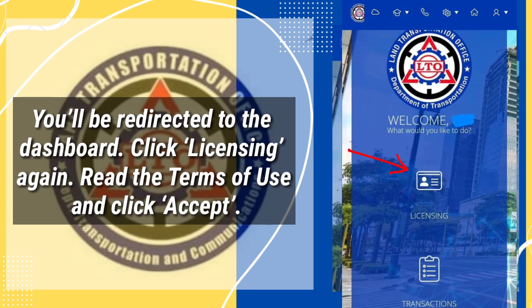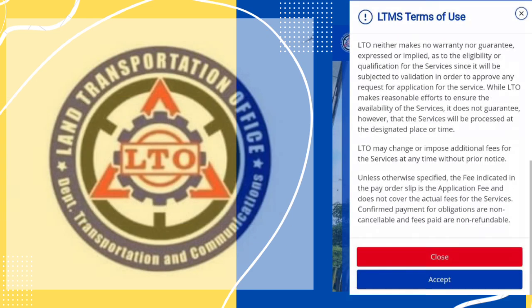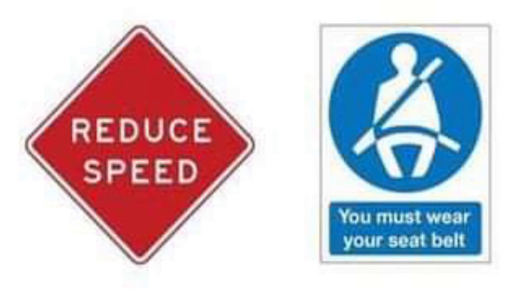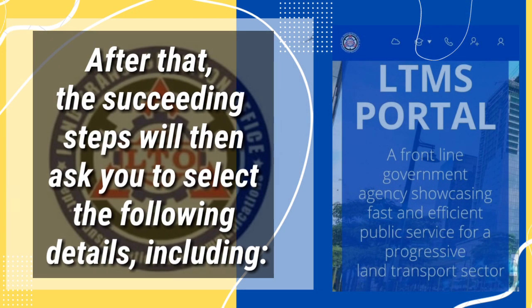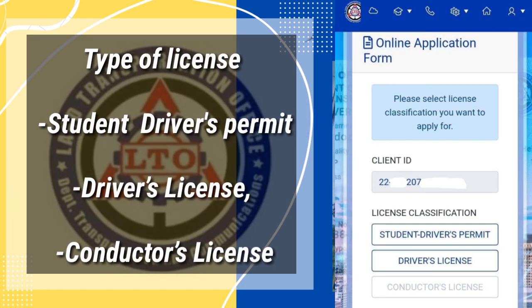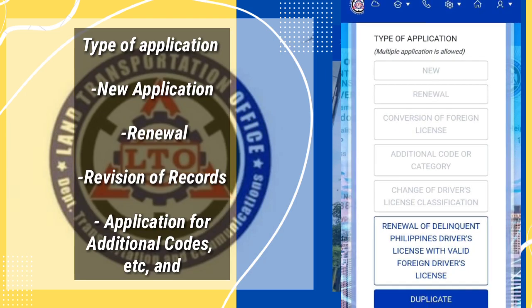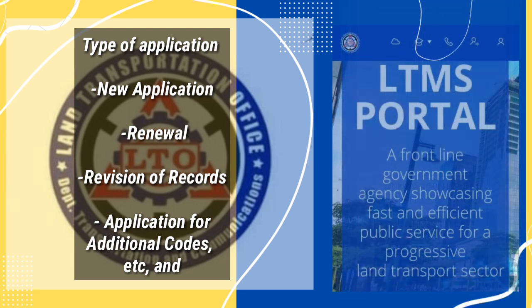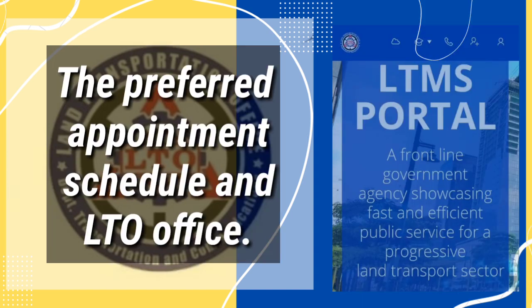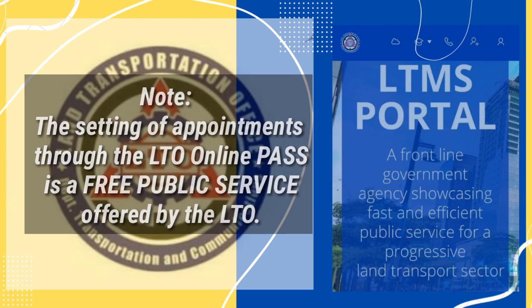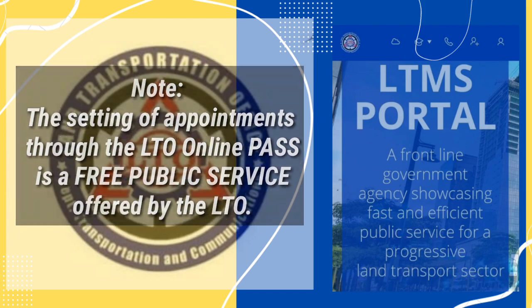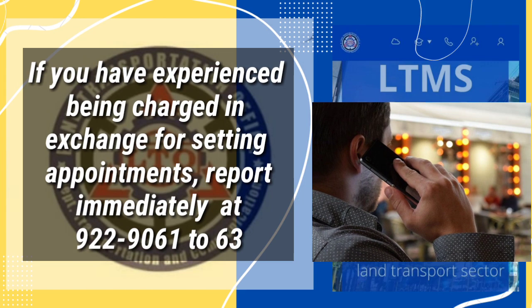You'll be redirected to the dashboard. Click Licensing again, read the Terms of Use, and click Accept. Step 12: The succeeding steps will ask you to select the type of license — Student Driver's Permit, Driver's License, or Conductor's License — type of application: New Application, Renewal, Revision of Records, Application for Additional Codes, etc., and the preferred appointment schedule and LTO office. Note: the setting of appointments through the LTO Online Pass is a free public service. If you have experienced being charged for setting appointments, report immediately at 922-906-1263.